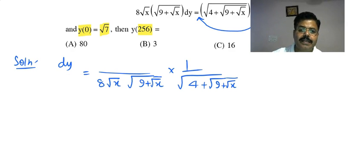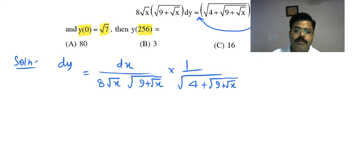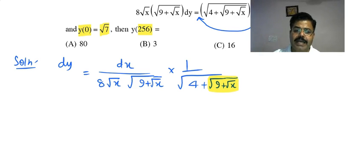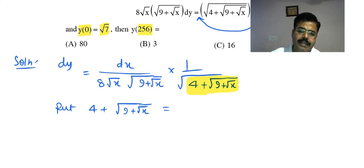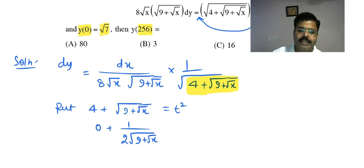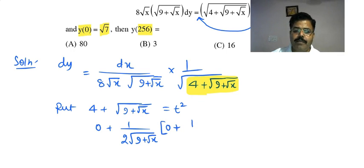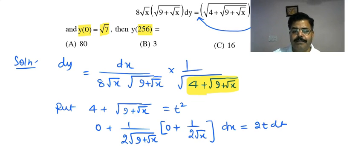To integrate, substitute t² = 4 + √(9+√x). Then differentiating: the derivative of √(9+√x) is [1/(2√(9+√x))] · [1/(2√x)], and dt expression gives dx = 8√x · √(9+√x) · √(9+√x) ... working through the chain rule yields 8√x · √(9+√x) · (something) dx = 2t dt.